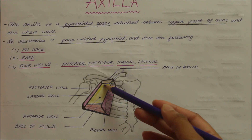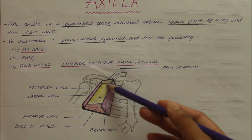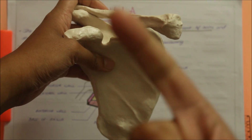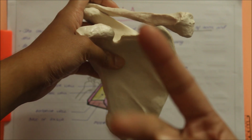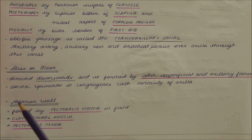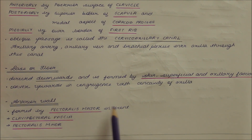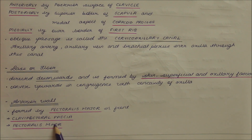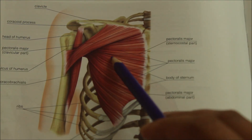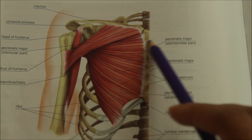Now let us look at the features of the anterior wall. The anterior wall of the axilla is formed by the pectoralis major in front, the clavipectoral fascia, and the pectoralis minor. This is an anterior view of the shoulder showing the pectoralis major muscle.